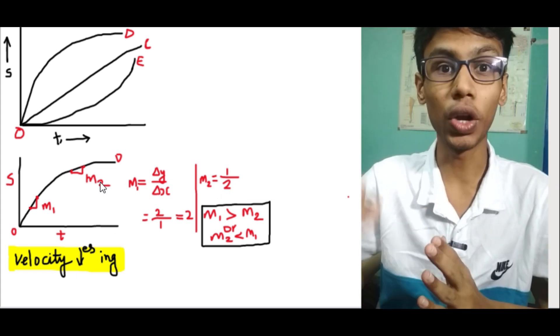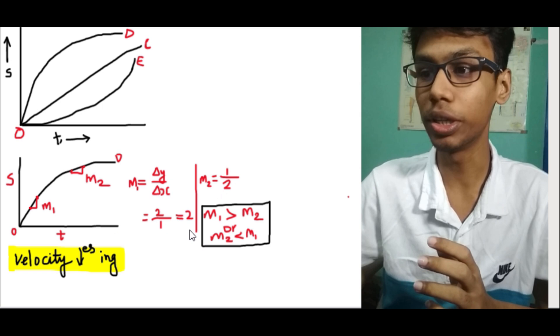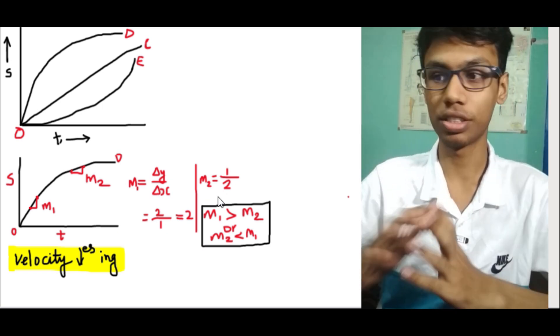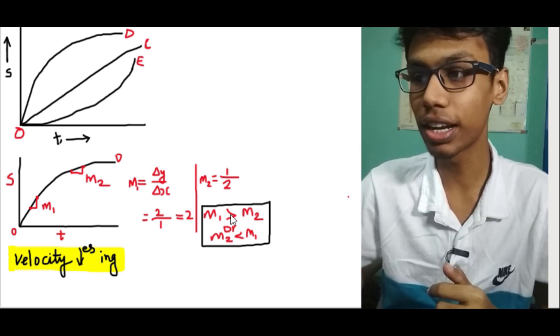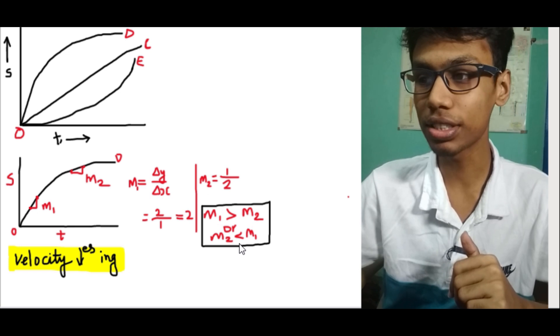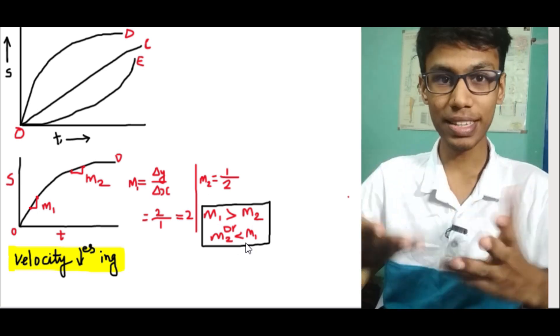In this graph, the slope of M1 is 2 and M2 is half. So M1 is greater than M2 — that means M2 is less than M1.